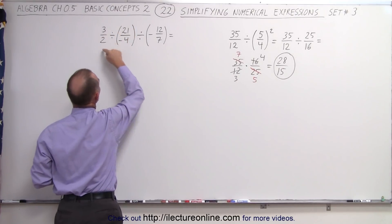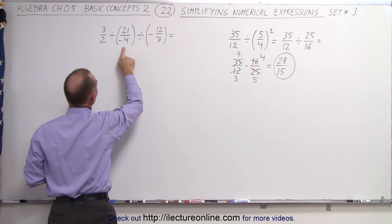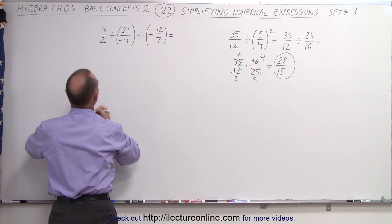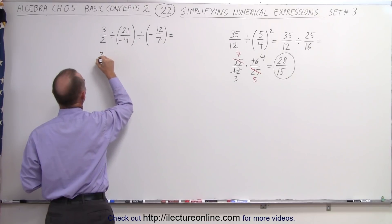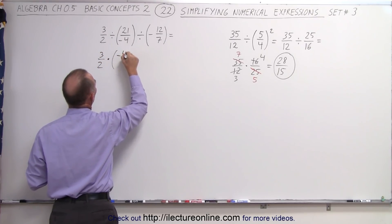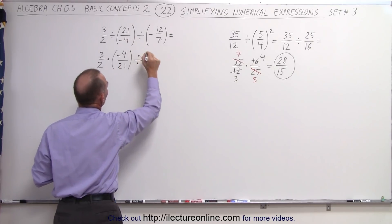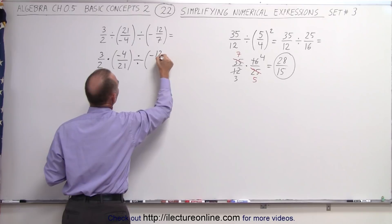So we're going to take care of this portion here first. And again, the rule is that if we divide with a fraction, it's the same as multiplying by its inverse. So this can now be written as 3 over 2 multiplied times a negative 4 over 21 divided by, we'll leave this one alone, minus 12 divided by 7.